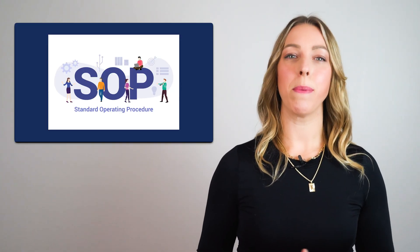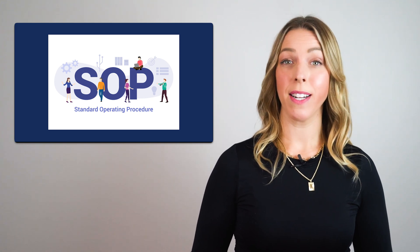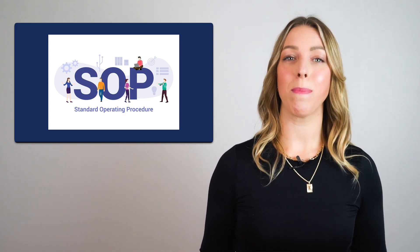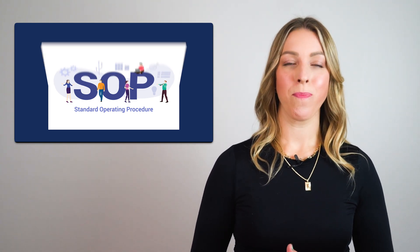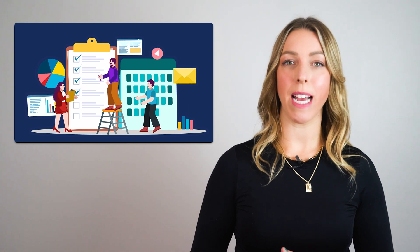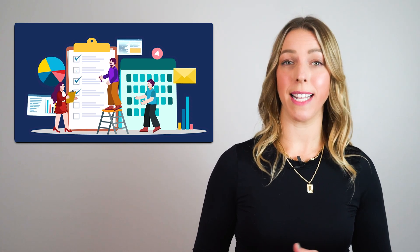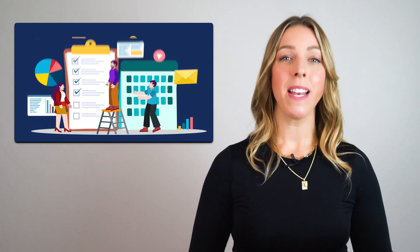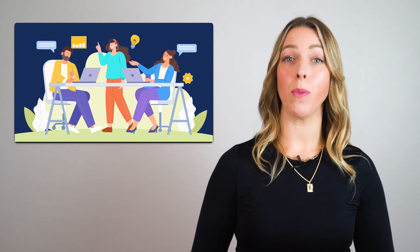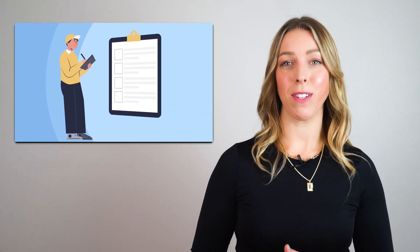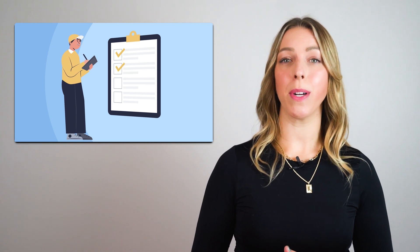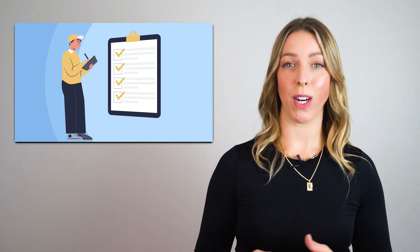Firstly, establish the purpose of the SOP upfront, clarifying the intended goal to set expectations. Secondly, outline the sequential steps of the process in a clear and organized manner. Next, define the responsibilities and roles of individuals for each step to ensure clarity and accountability throughout the process. Next, make clear procedures — describe each step with clear and concise language, presenting well-structured instructions.